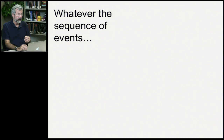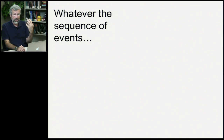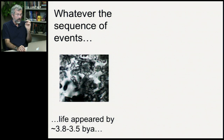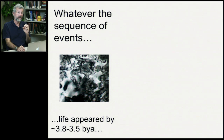Having seen the potential origins of all the bits and pieces for a self-replicating cell, we've got life. What do we know about early life? Whatever the sequence of events — how accurate those guesses are about the micelles being the prototypes for the first cell walls or whatever — we know that life appeared on this planet about 3.8 to 3.5 billion years ago, and they were the bacteria.